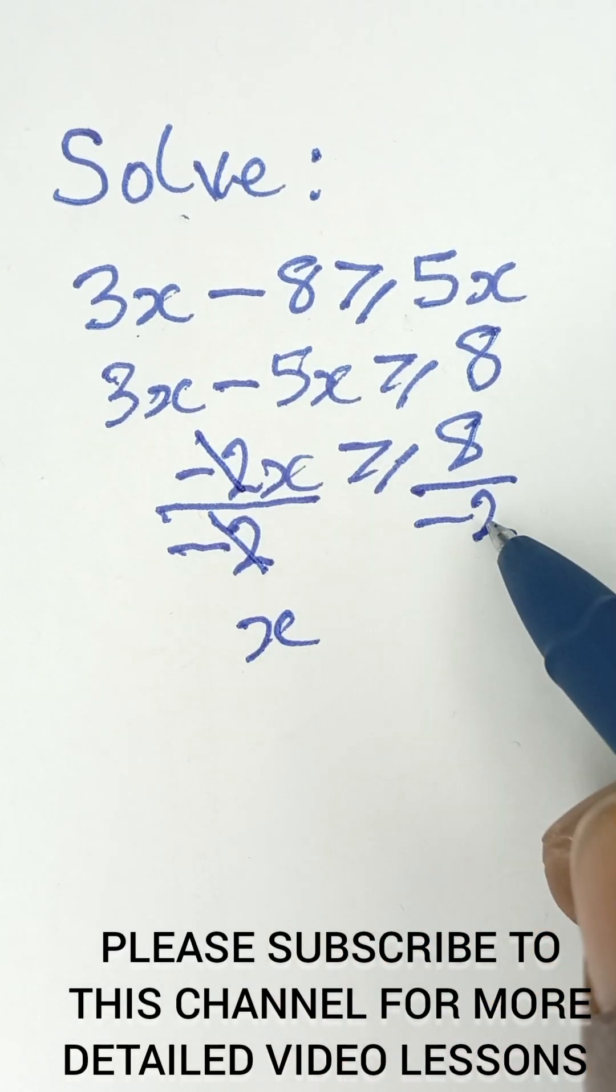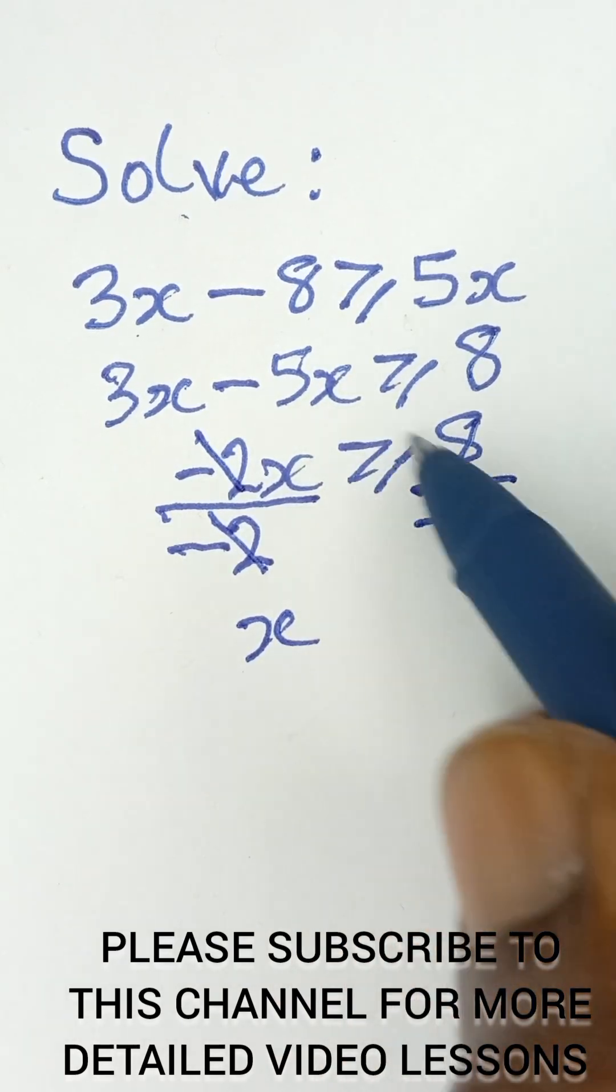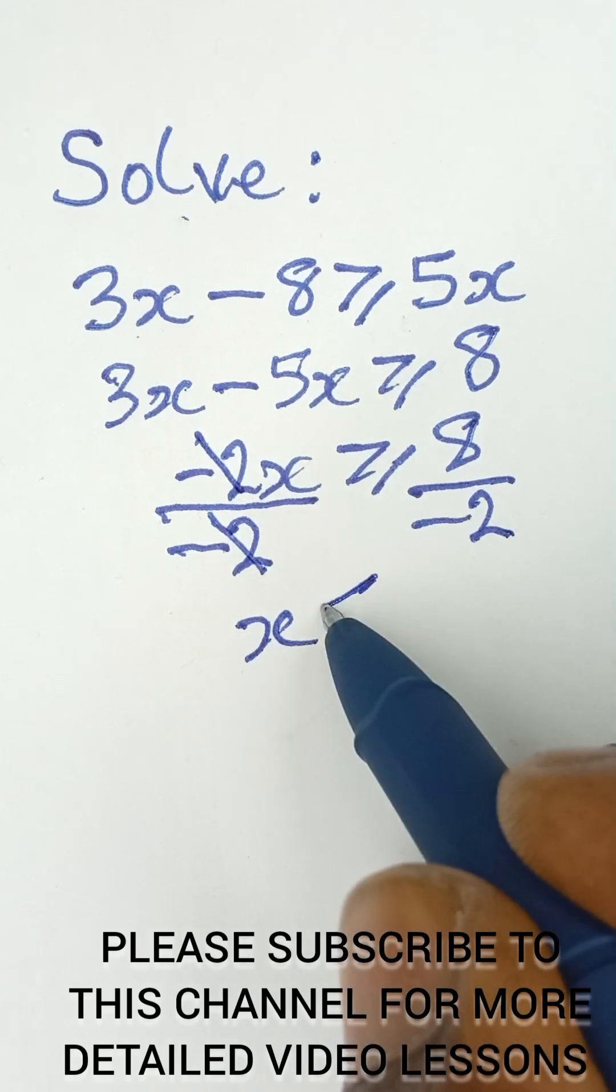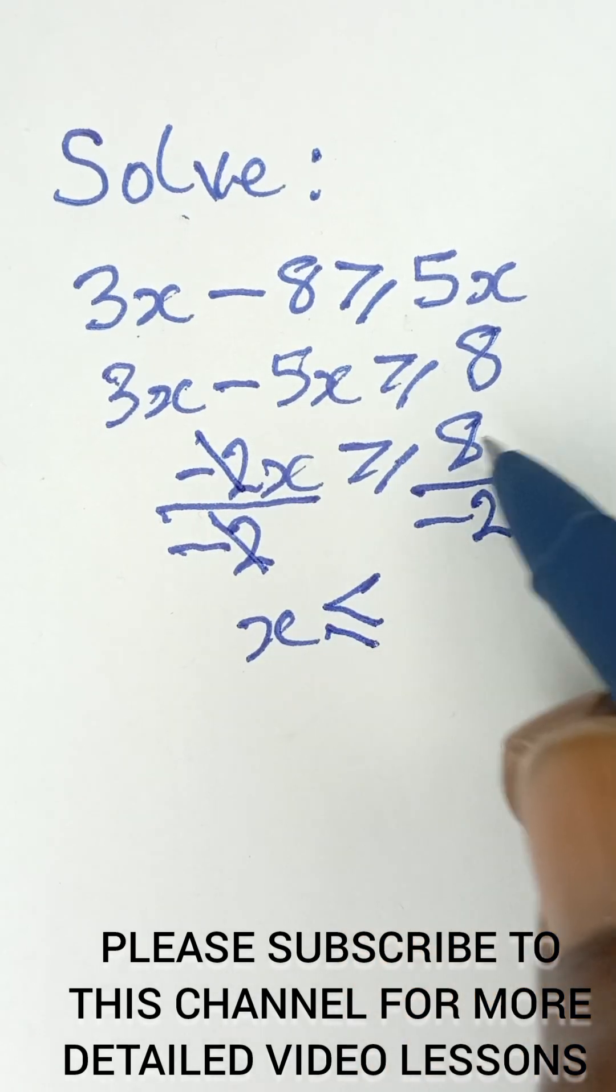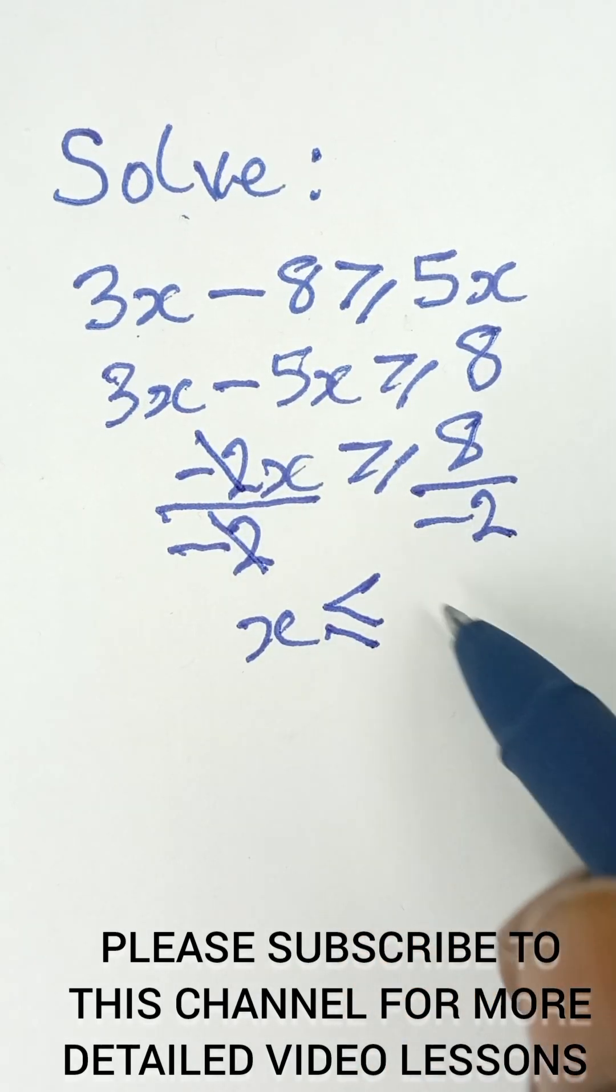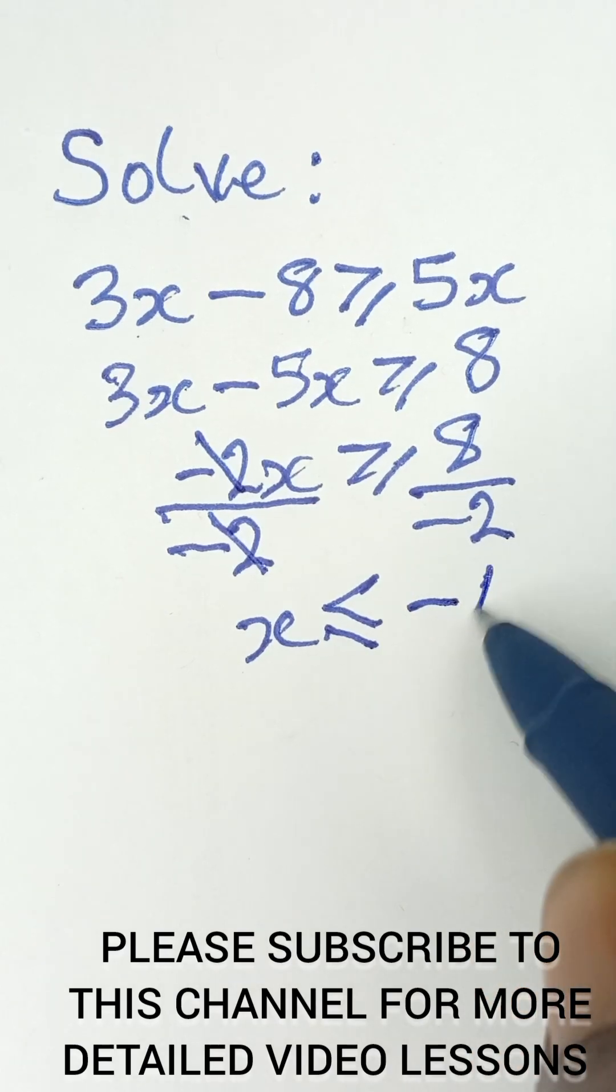Because we are dividing both sides by a negative number, you are going to reverse the inequality. So it becomes less than or equal to. 8 divided by negative 2 will give us negative 4.